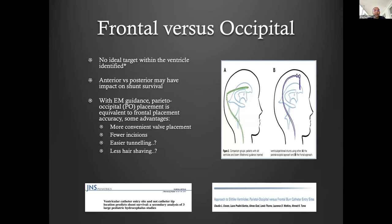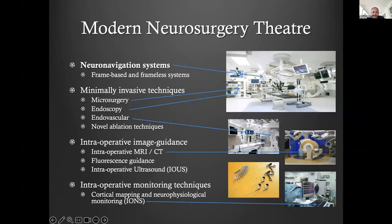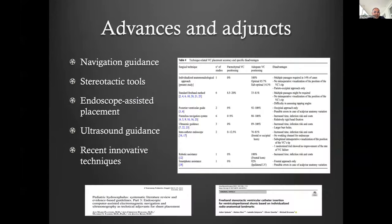The modern neurosurgery theater becomes increasingly complex. The adjuncts I wanted to select out — not so much tips and tricks, but recommendations and maybe even guidelines — fall into roughly four or five broad categories: navigation guidance, which includes electromagnetic or optic navigation; stereotactic tools; endoscope-assisted; ultrasound guidance; and some more recent advances and techniques.